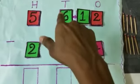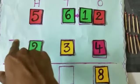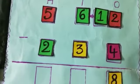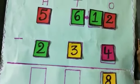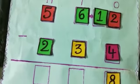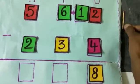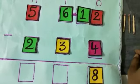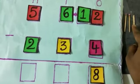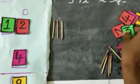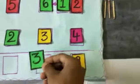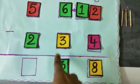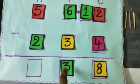Now subtract the tens place: 6 tens minus 3 tens. 3 is given below. So we count 3 after 6: 4, 5, 6. How many sticks are there? 1, 2, 3. Take the number 3 and write in the tens place. 6 tens minus 3 tens equals 3 tens.